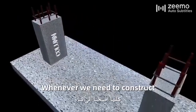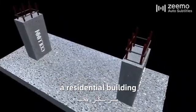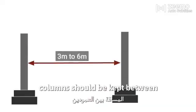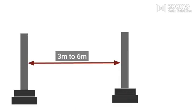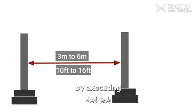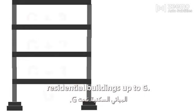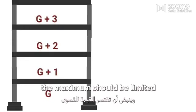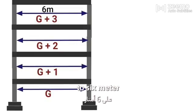Whenever we need to construct a residential building, the distance between two columns should be kept between 3m to 6m. This distance can be increased in case of high-rise buildings by executing the post-tensioning method. Since we are talking about residential buildings up to G plus 3 storey, the maximum span should be limited to 6m or 16 feet.